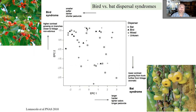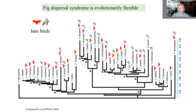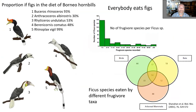These dispersal syndromes are based on morphology, with some flexibility. The ordination of fruit characteristics with different dispersers — bats, birds, or mixed — shows that the bird syndrome correlates with smaller, softer, darker fruits, while the bat syndrome correlates with larger aromatic fruits. When you look at the fig phylogeny, these syndromes are quite flexible and can fluctuate phylogenetically.